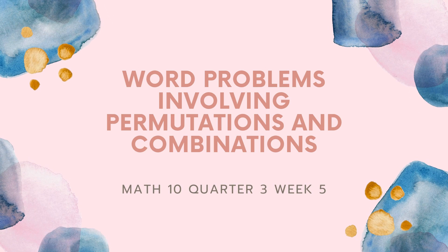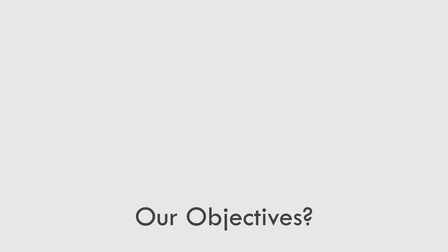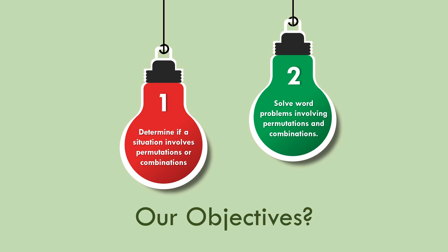Our lesson is about word problems involving permutations and combinations. Our objectives are: first, we will determine if a situation involves permutations or combinations; and second, we will solve word problems involving permutations and combinations.